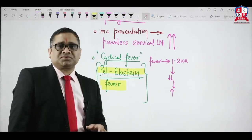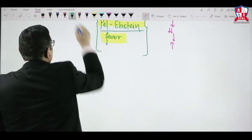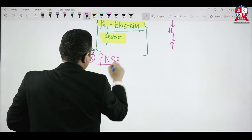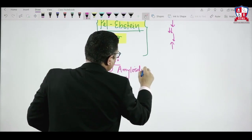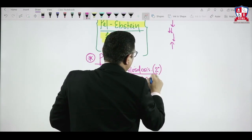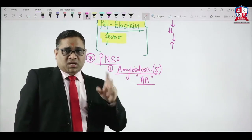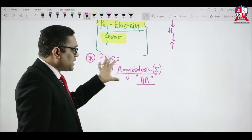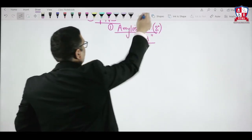Hodgkin's lymphoma has a characteristic association with two paraneoplastic syndromes, which were earlier questioned in AIIMS and All India exams. The first is secondary amyloidosis — specifically AA type amyloid deposition. Secondary amyloidosis is seen in both renal cell carcinoma and Hodgkin's lymphoma.